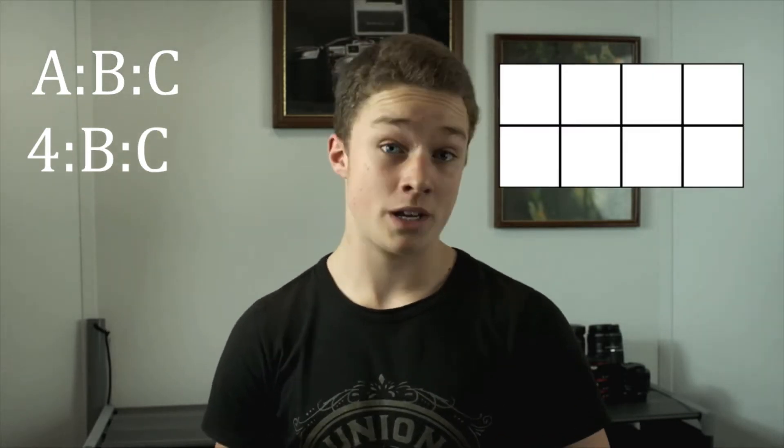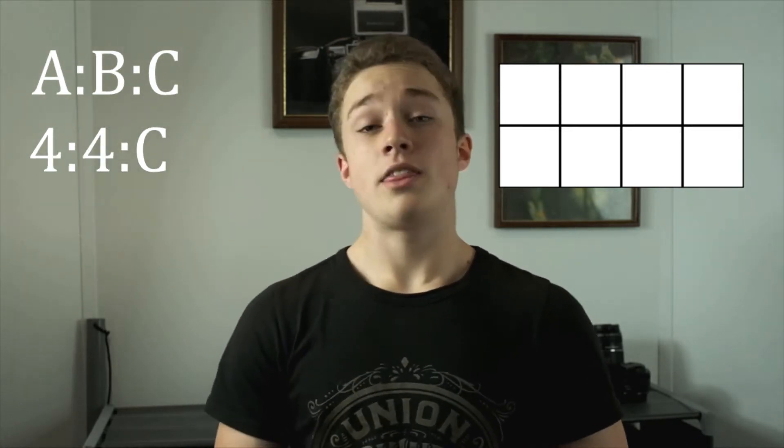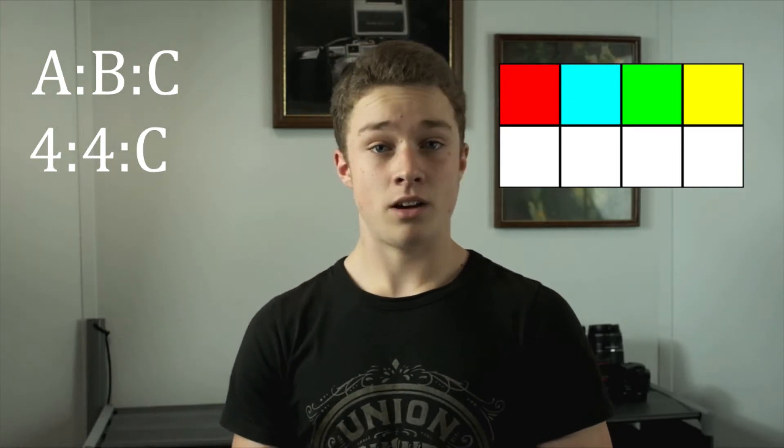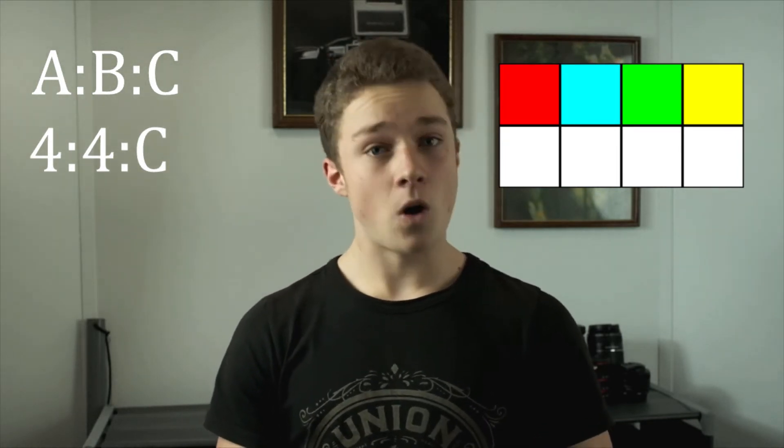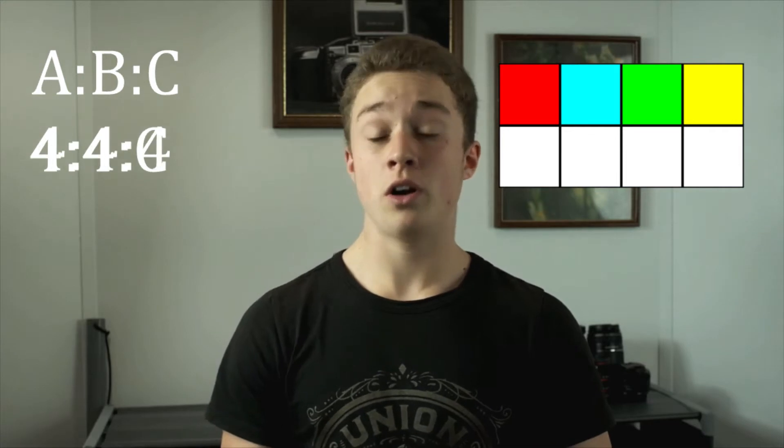So now let's talk about what all these numbers mean and how they affect your video. I'm going to be replacing the three numbers with three letters: A, B, and C. So A is 4, if you're looking at 4-4-4 video. That means we have a reference area of pixels that's 4 pixels wide and 2 pixels tall. The next number, represented by B — if that is 4, then all 4 pixels on the top row of pixels in your reference area can all be different colors. Next, you get to C. And if the number that stands for C is also 4, that means all 4 pixels on the bottom of your reference frame can be different.